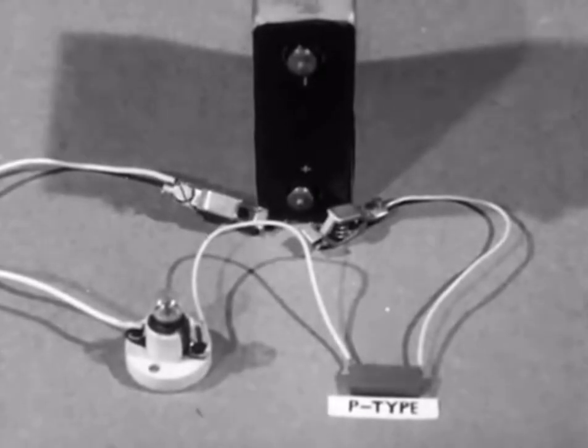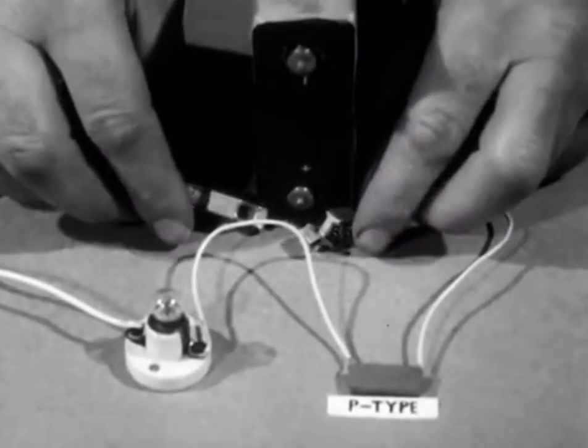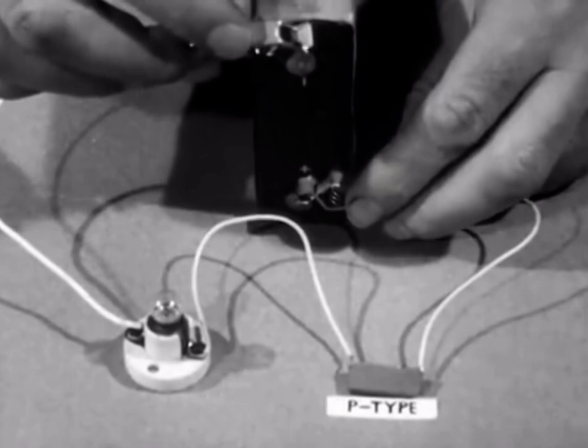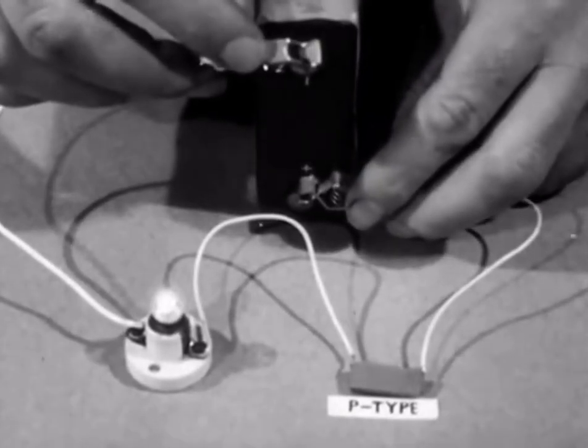Here is a piece of P-type germanium. It looks like ordinary germanium, and current will flow through it in either direction, as with the N-type germanium.